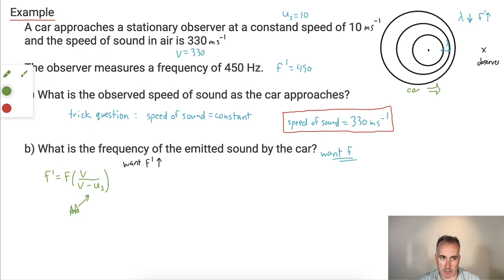So let's go ahead and calculate this then. So F prime equals F - I'm just going to try to keep the variables here. And I'm going to sub in what V is. So V is 330. So 330 divided by, well, 330 minus 10. So that means I have F prime equals F times 330 over, well we can say 320.